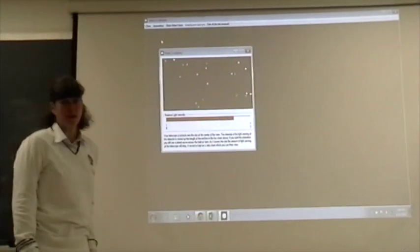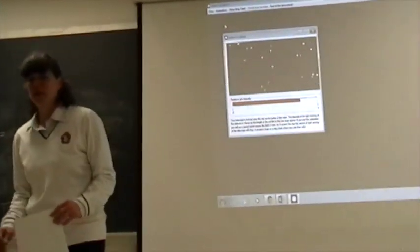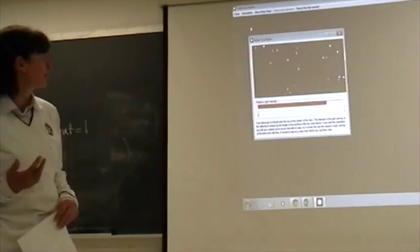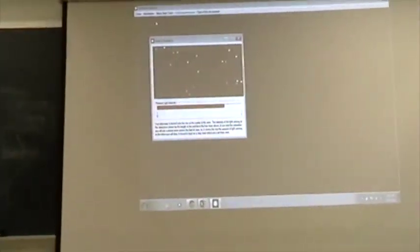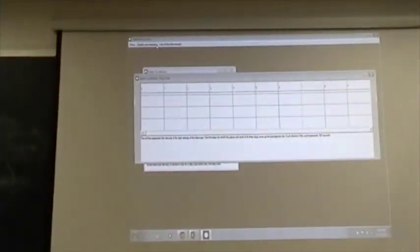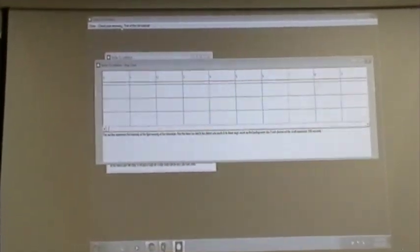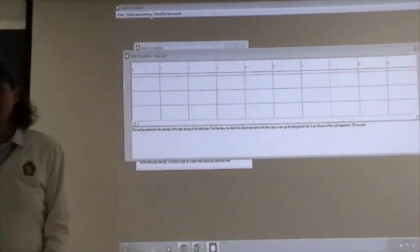What virtual astronomy will give you is the relative light intensity as a function of time. To see how that light intensity changes, you would just open up the strip chart from this top menu. Notice what you see. This red line here represents the light arriving at the telescope.